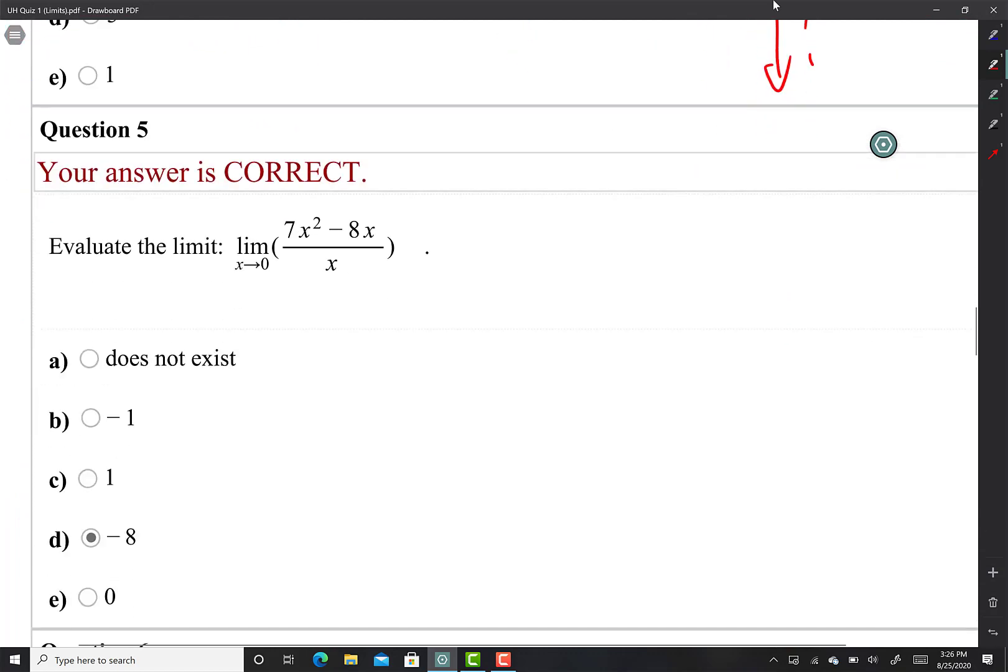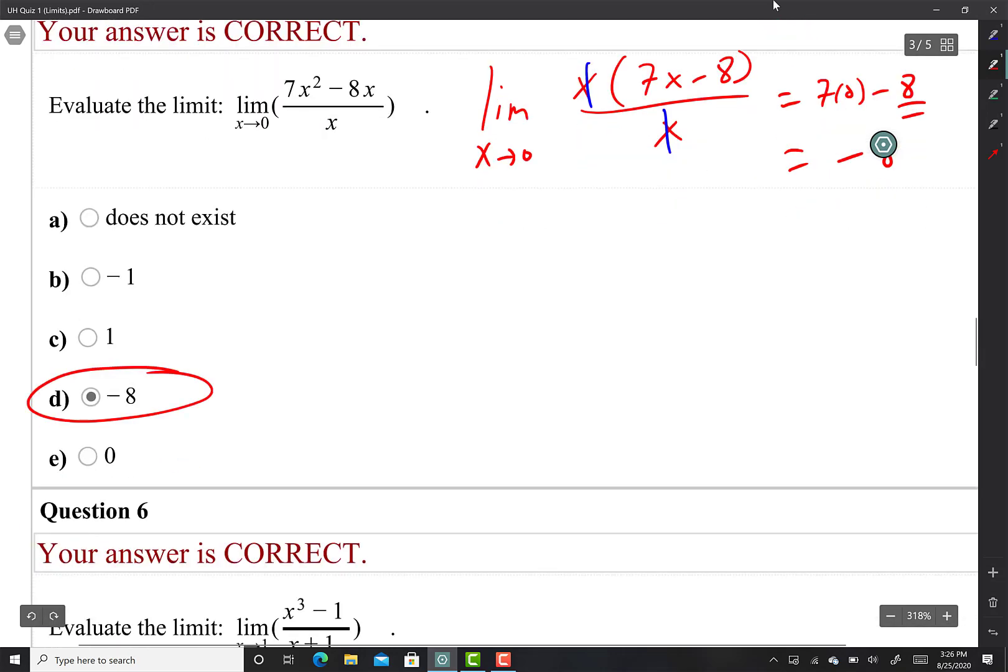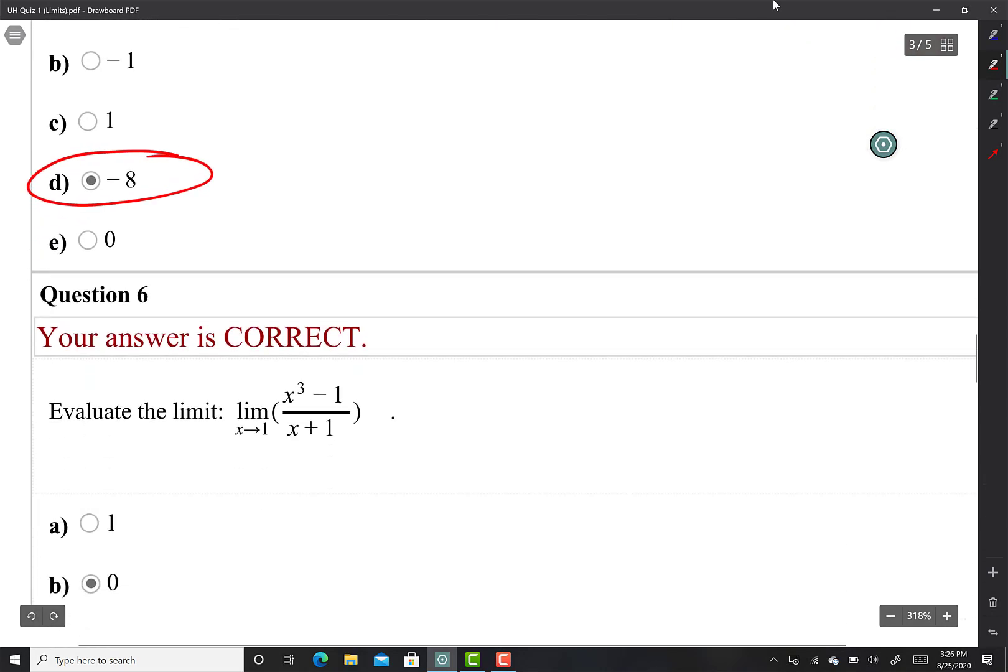This one you can't do direct substitution but you can factor out the numerator and denominator. Limit as x approaches 0, I factor out an x and I have 7x minus 8 on top. On the bottom there's my x. Those x's cancel out and now I can do direct substitution. If I plug in 0 I get 7 times 0 minus 8, so just negative 8.